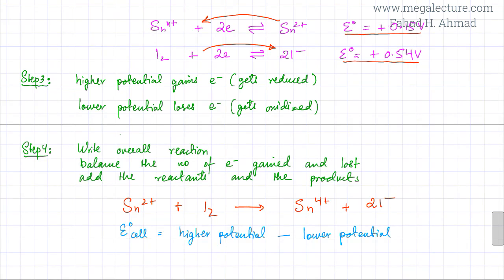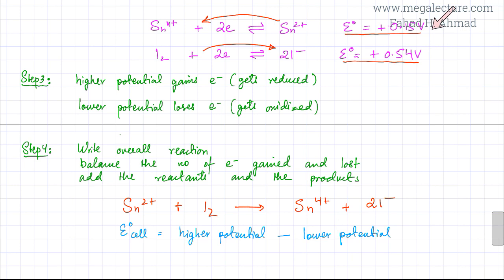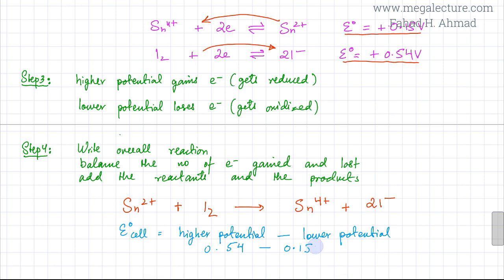The last thing is to calculate the E°cell for this second reaction: higher potential minus lower potential, which is 0.54 minus 0.15 volts, giving an E°cell of 0.39 volts. That is the overall E°cell for this second reaction.